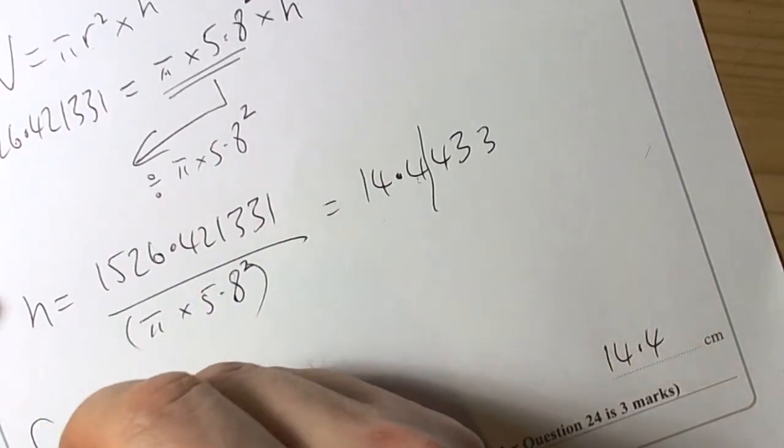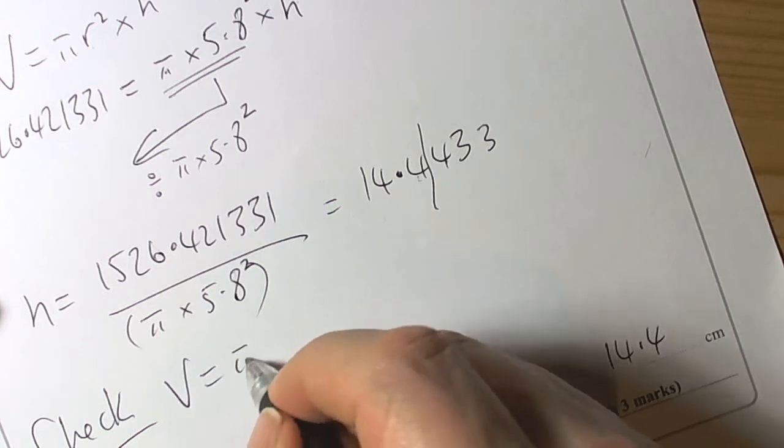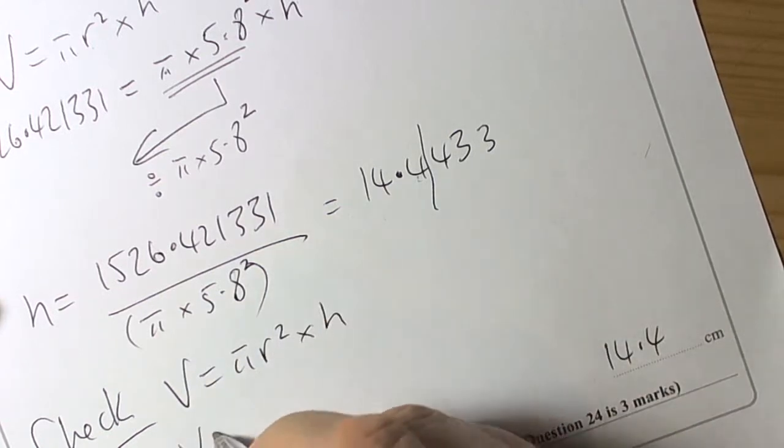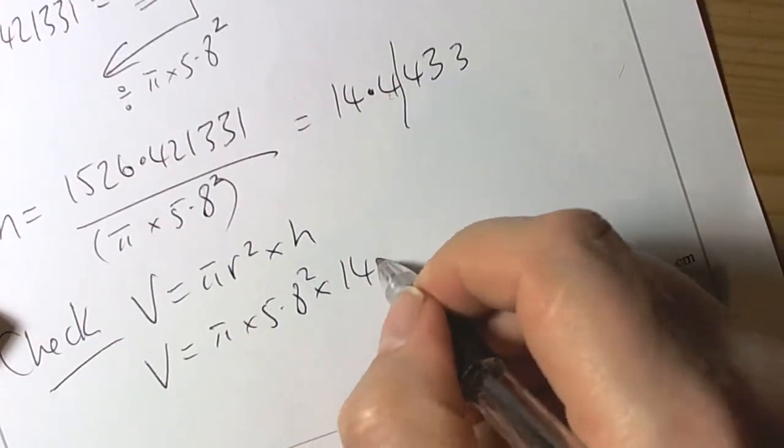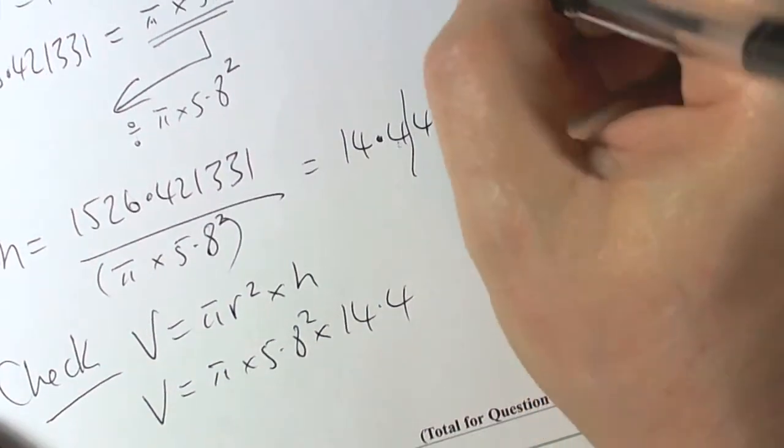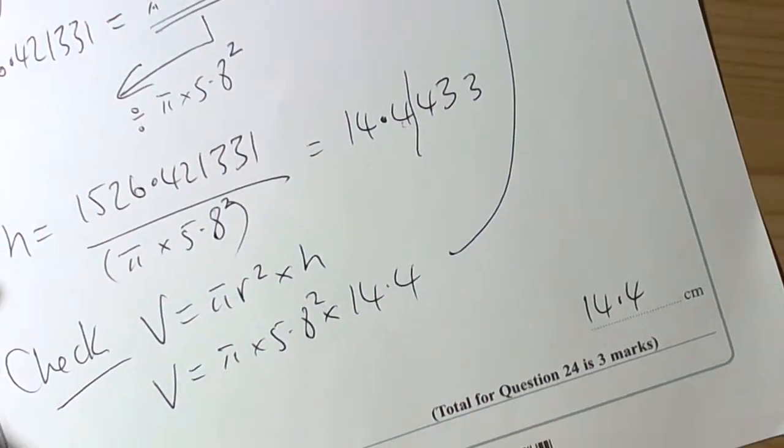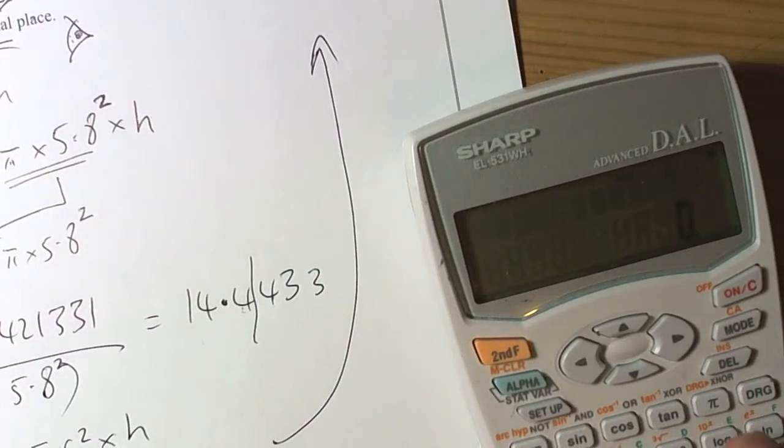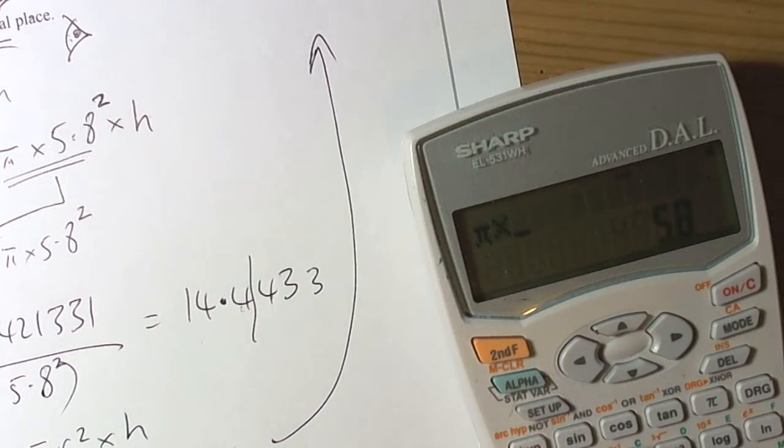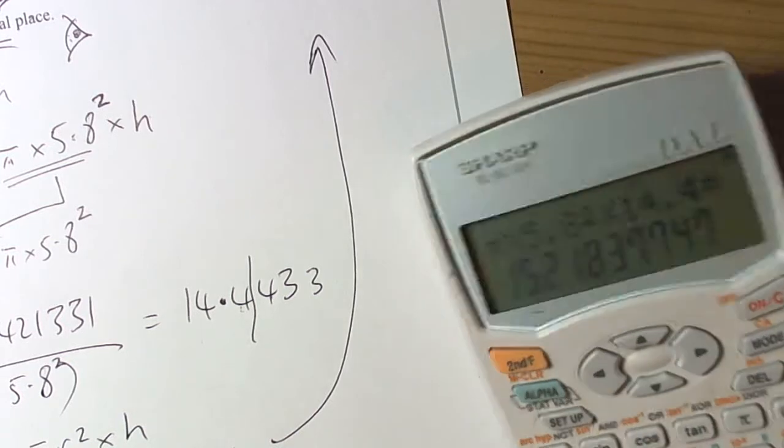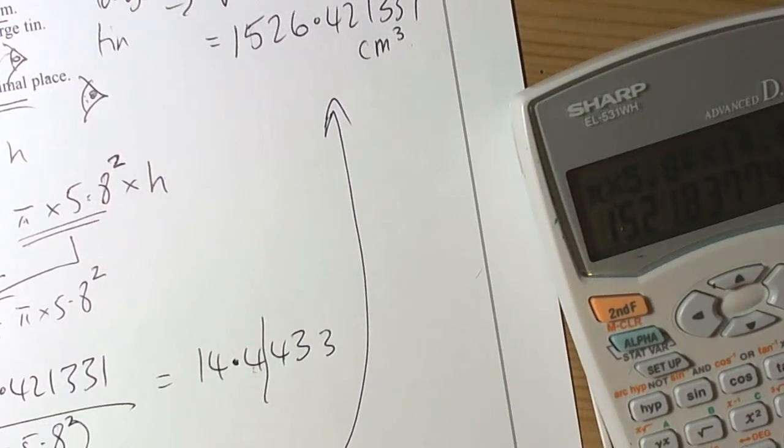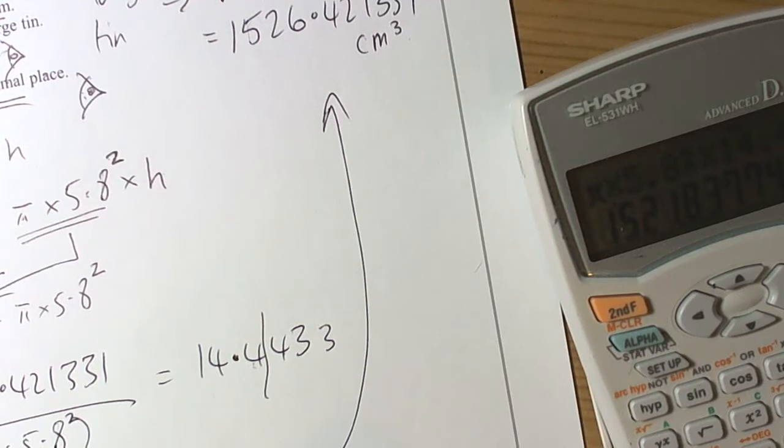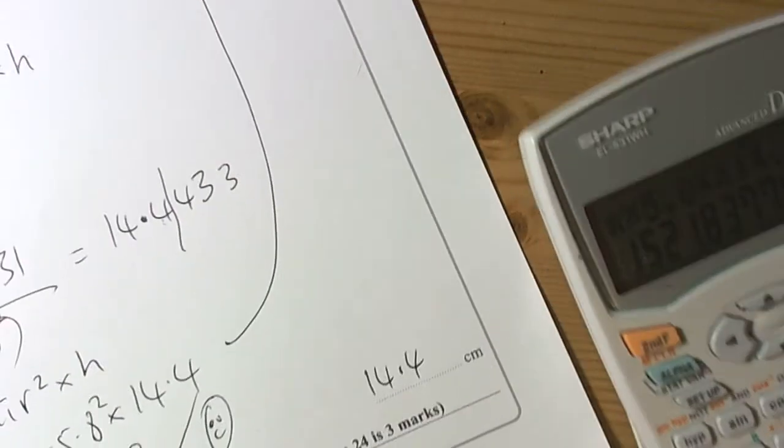Now of course we should check that that works. So the volume of the cylinder is given by πr²h. So π times 5.8 squared times 14.4 should give us an answer very close to that. That's what we're checking. So π times 5.8 squared times 14.4 equals 1521.8. And the check works. It's close enough, because I rounded the answer to one decimal place.